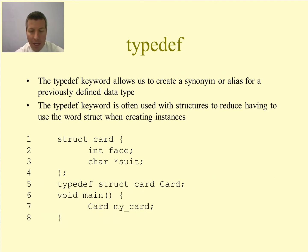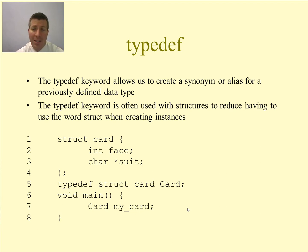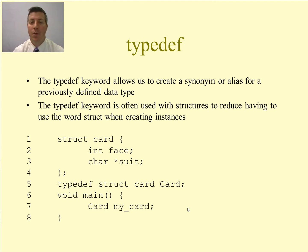You may have thought that it was kind of odd to have to say 'struct card' and then the name of that variable in your code. So the way that we've seen to create an instance of this struct card is we would have written 'struct card' and then the variable name. This is a little cumbersome because we don't typically have variable types that consist of more than one word.